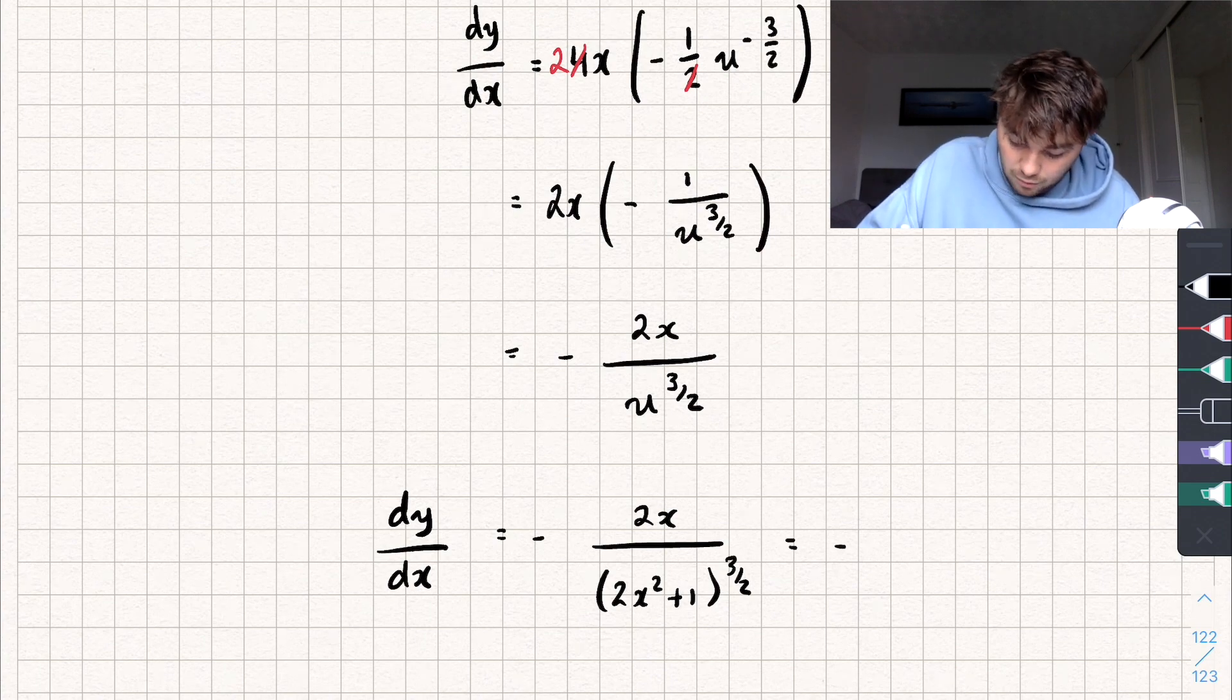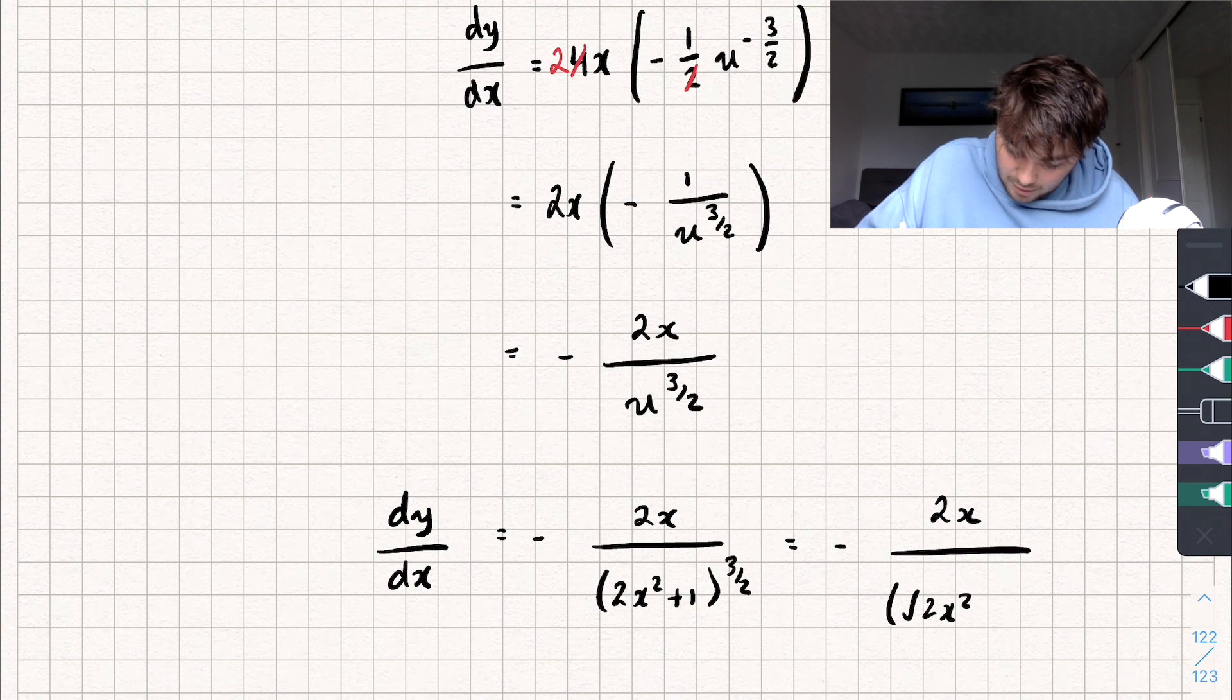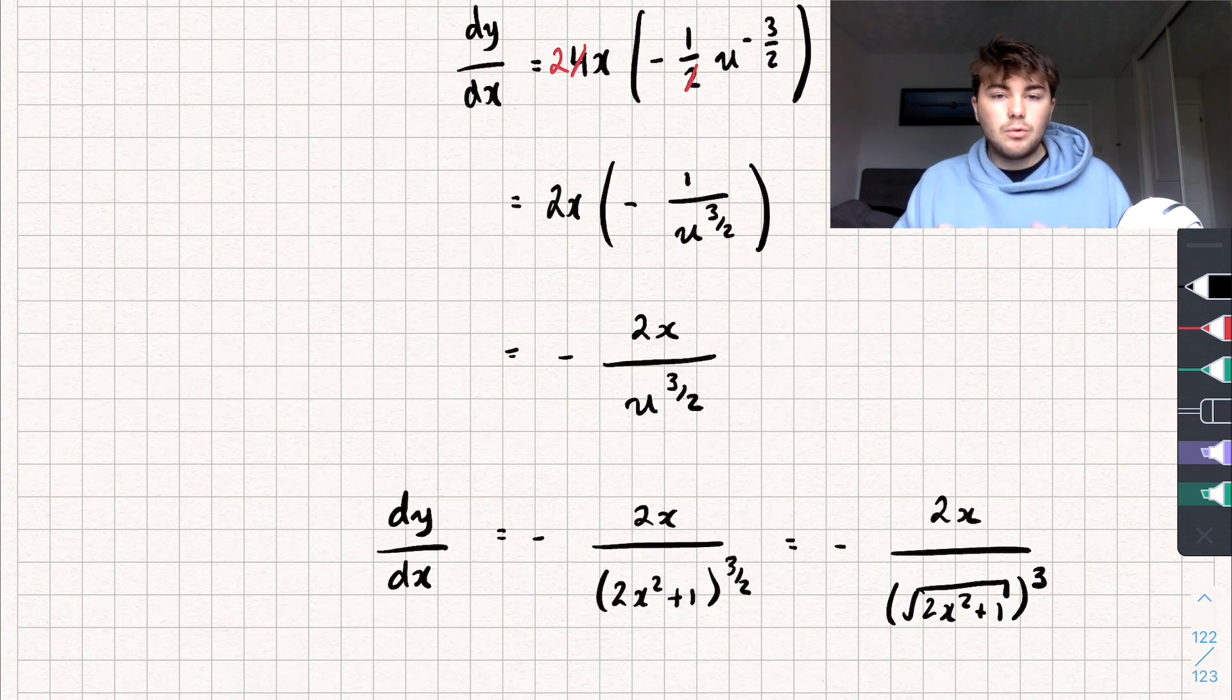And I guess if you really wanted to, you could write it like this. So, 2x over the square root of 2x squared plus 1. And that's all cubed. So, there you go. So, that's how we can use the chain rule to differentiate.